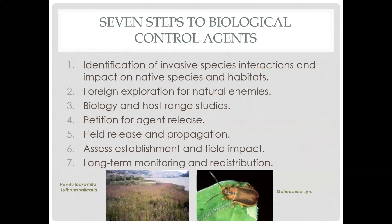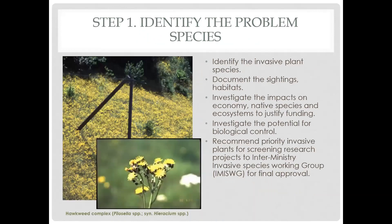There are seven steps to obtain biological control agents. These are: identification of invasive plant interactions and impact on native species and habitats; foreign exploration for natural enemies in countries of origin; biology and host range studies; petition for an agent release; field release and propagation; assessment of establishment and field impact; and long-term monitoring and redistribution. I will cover these in detail.